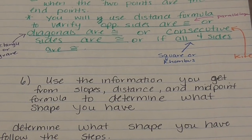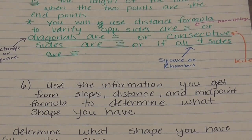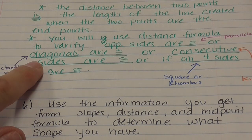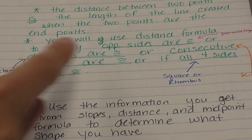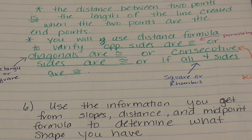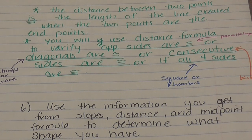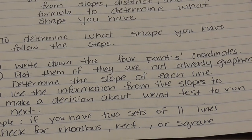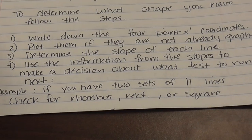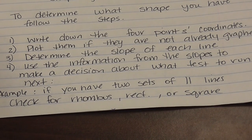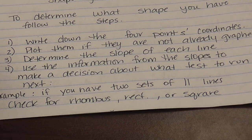You need to know all the properties of your different quadrilaterals to determine what shape you have using the slope, distance, and midpoint information. Write down all four points, plot them if not already given, determine the slope of each line, then use the slope information to decide what test to run next. If you have two sets of parallel lines, check for rhombus, rectangle, or square.